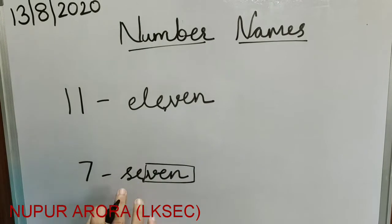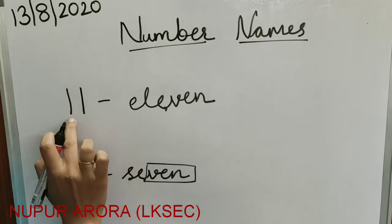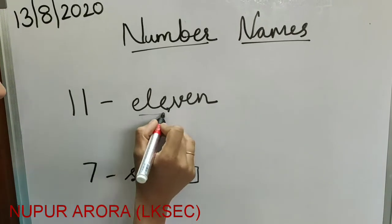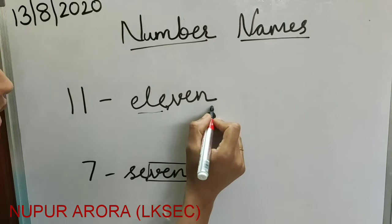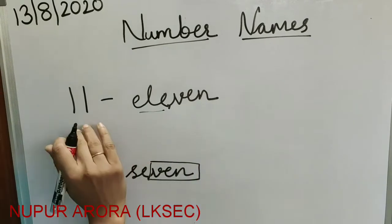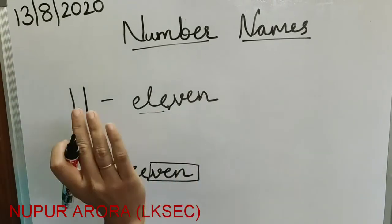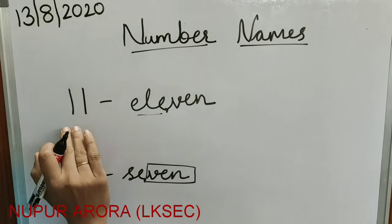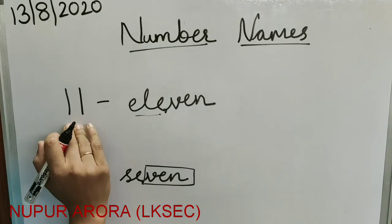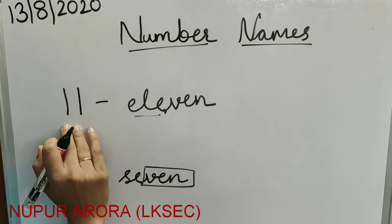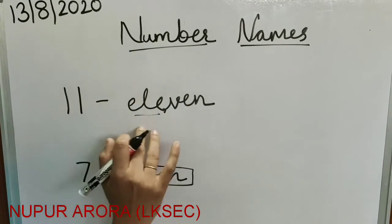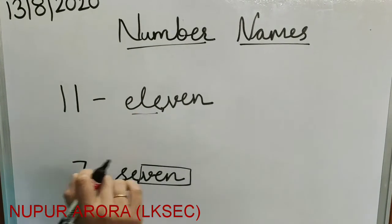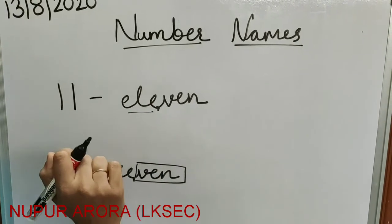So how will you learn it? 11 — E-L-E-V-E-N. Now you have to learn it like this and write it in your notebooks. The spelling of 11.